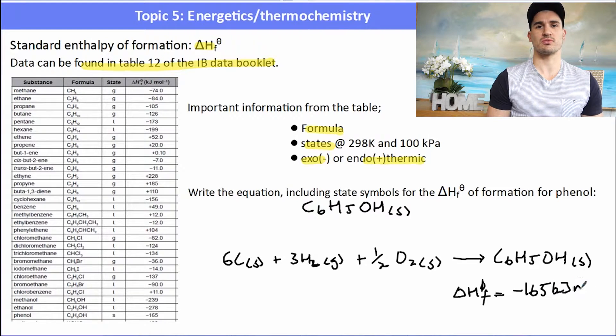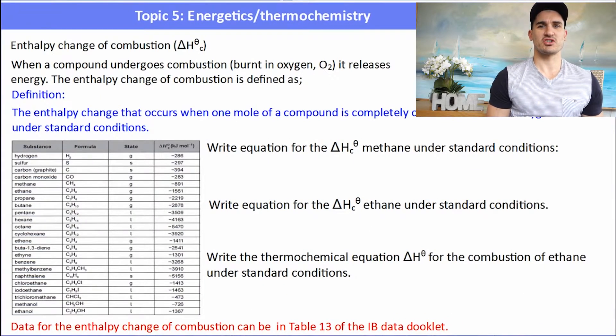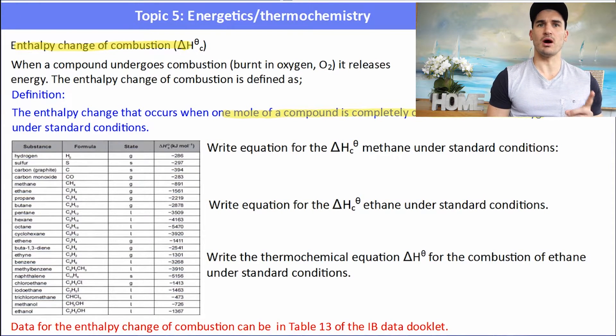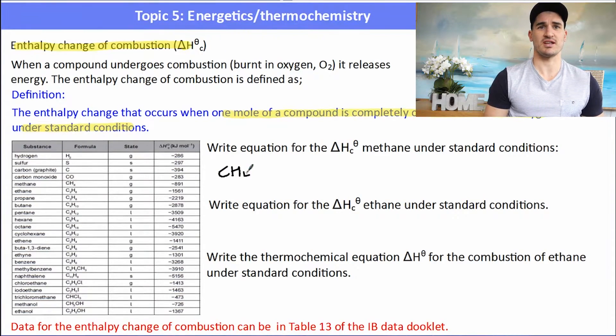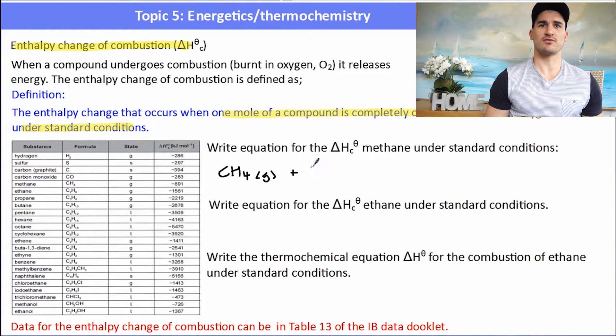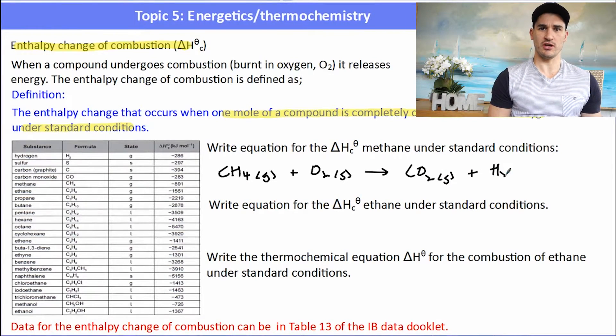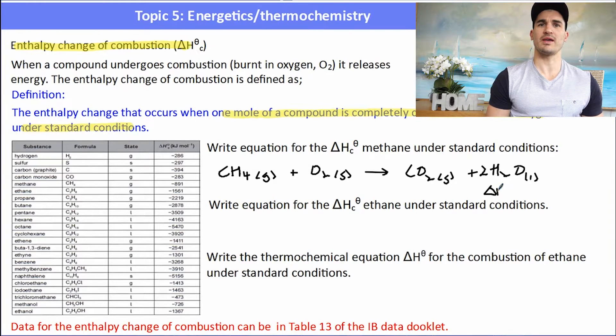So the enthalpy change of combustion, delta Hc, is how much energy is released when a compound undergoes complete combustion, burnt in oxygen. And it's when one mole of that compound is completely burnt. So one mole of the compound burnt in oxygen releases this much energy. So if we have methane, CH4 plus O2 goes to CO2 plus H2O. Remember to balance this up, we can use the little saying of CHOD: balance for carbon, balance for hydrogen, balance for oxygen, and then D for double. And by going through and balancing in that way, we've written the combustion reaction. One mole of methane will release 819 kilojoules.